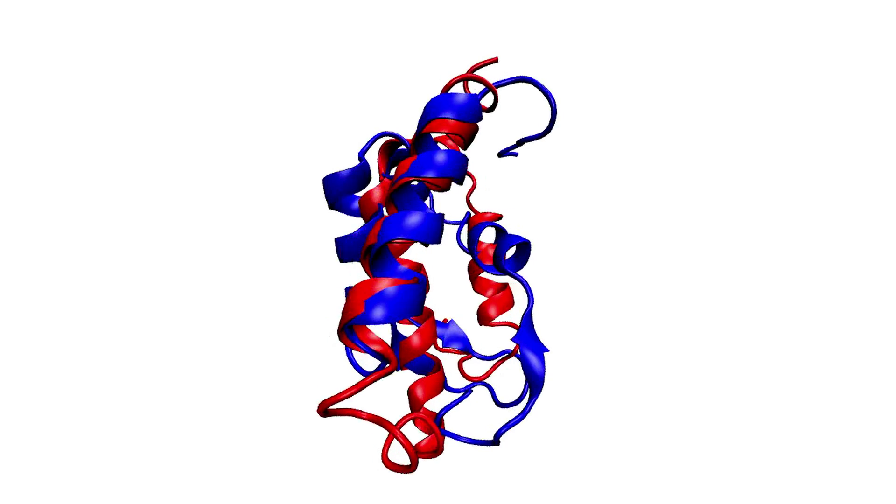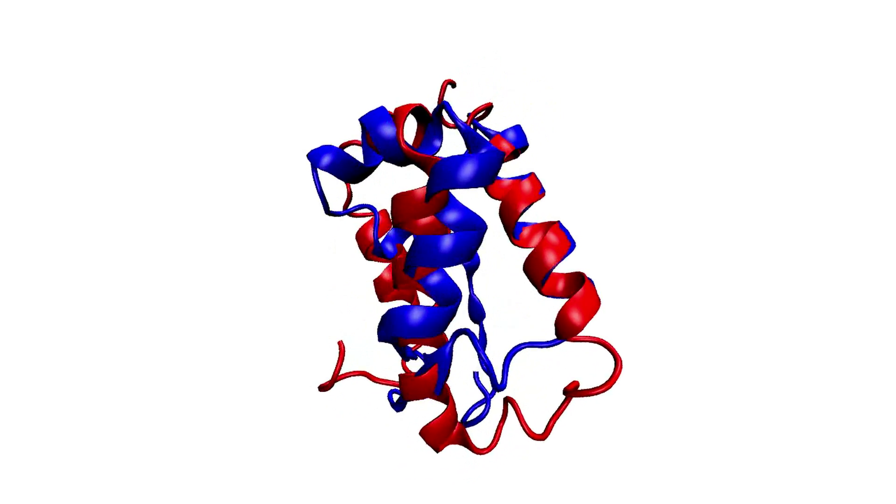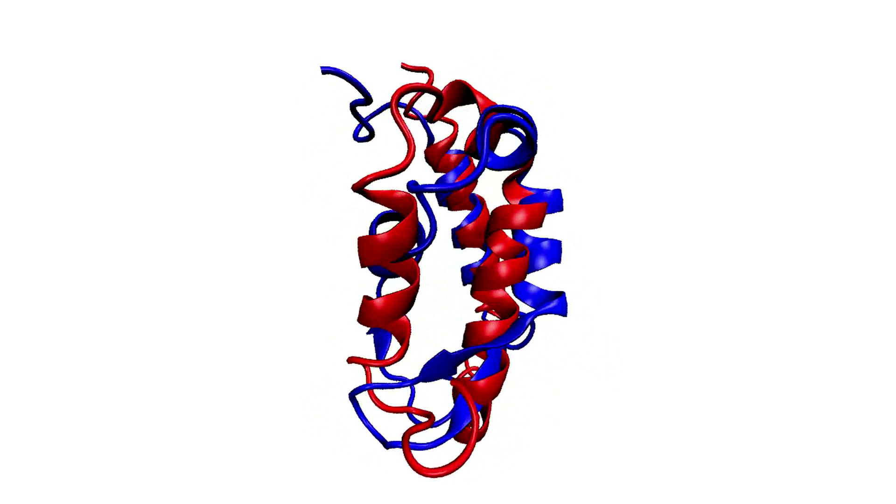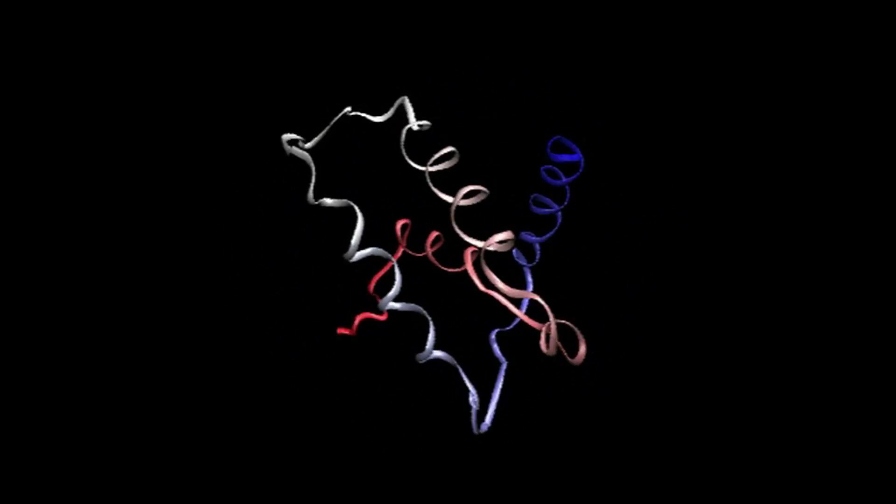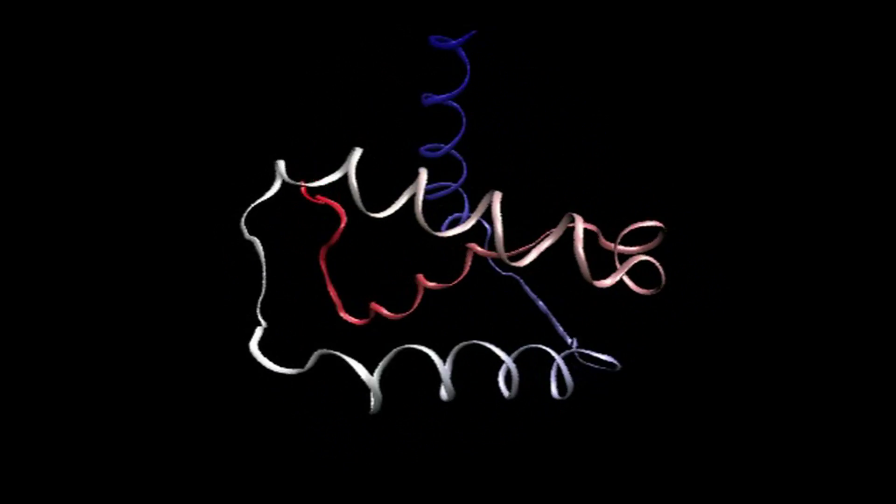Proteins are polymers, chain molecules made up of amino acids. Usually the sequence of those amino acids is determined by the DNA sequence that encodes the protein. So the surprising thing is that protein molecules when they're made are very disordered objects. They look like pieces of spaghetti just tumbling around in many different shapes.